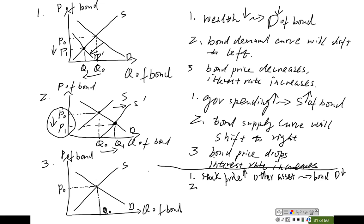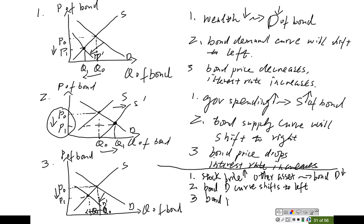So bond demand will go down. If bond demand goes down, the bond demand curve will shift to the left. With the new demand curve and the supply curve, we can see the new equilibrium point on the graph. The new equilibrium price is lower, and the new equilibrium quantity is reduced. So bond price drops, which indicates the interest rate will actually go up.